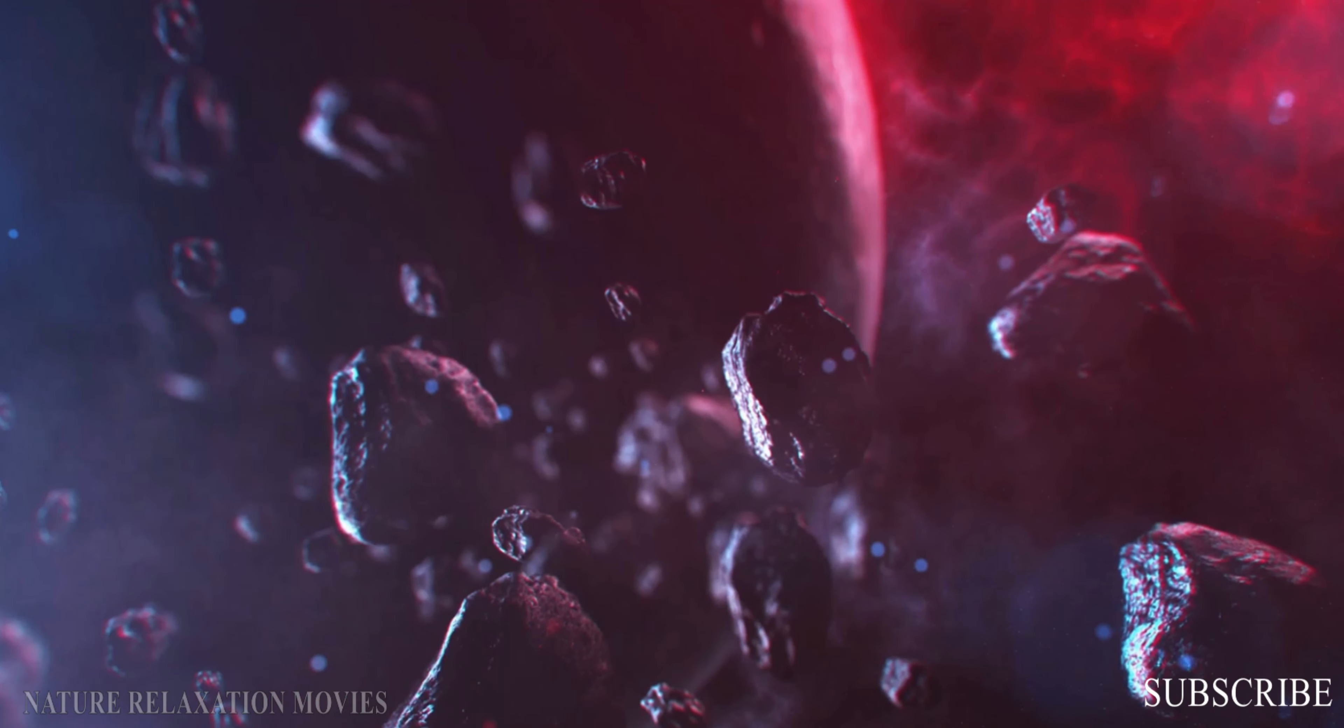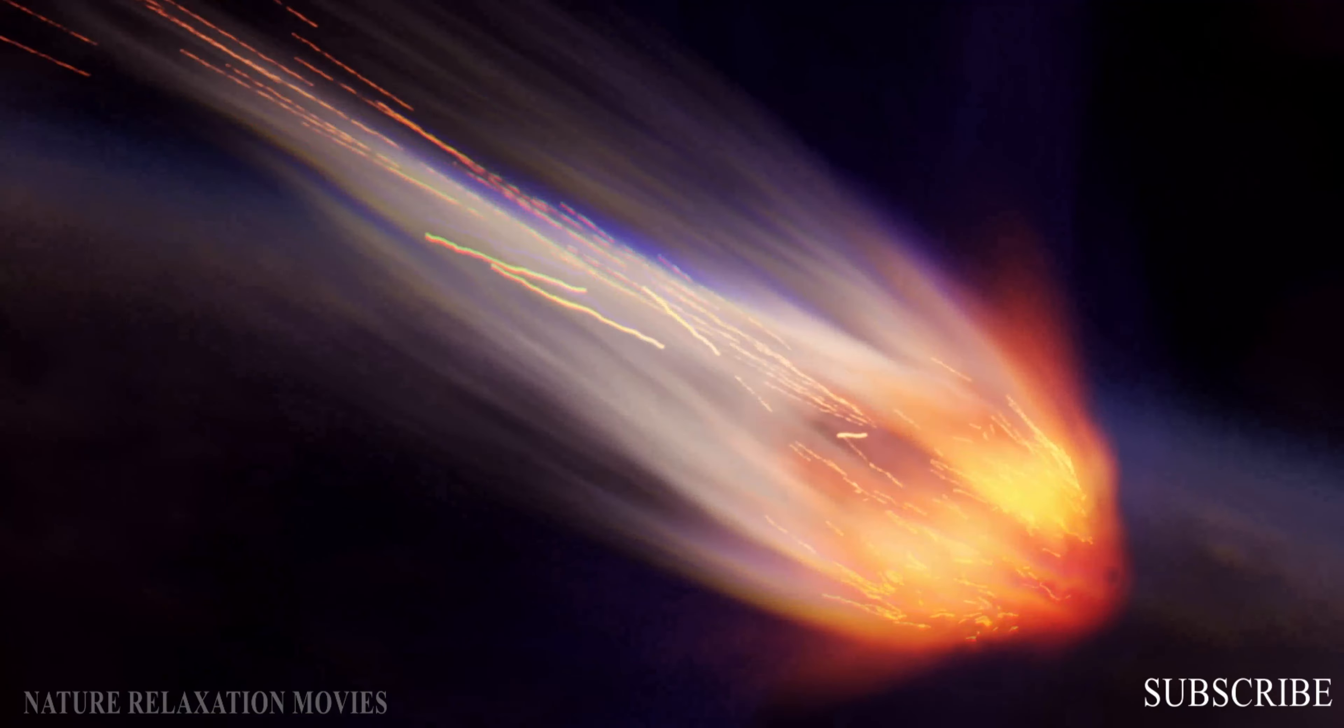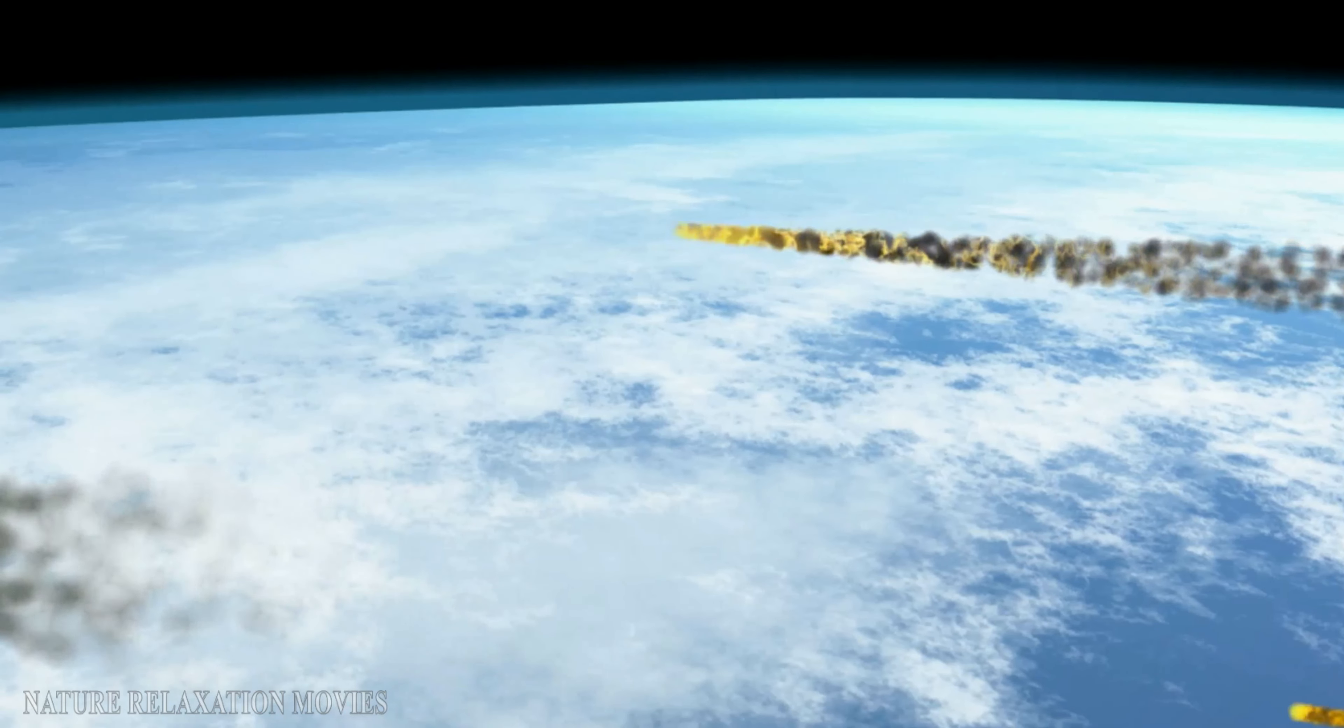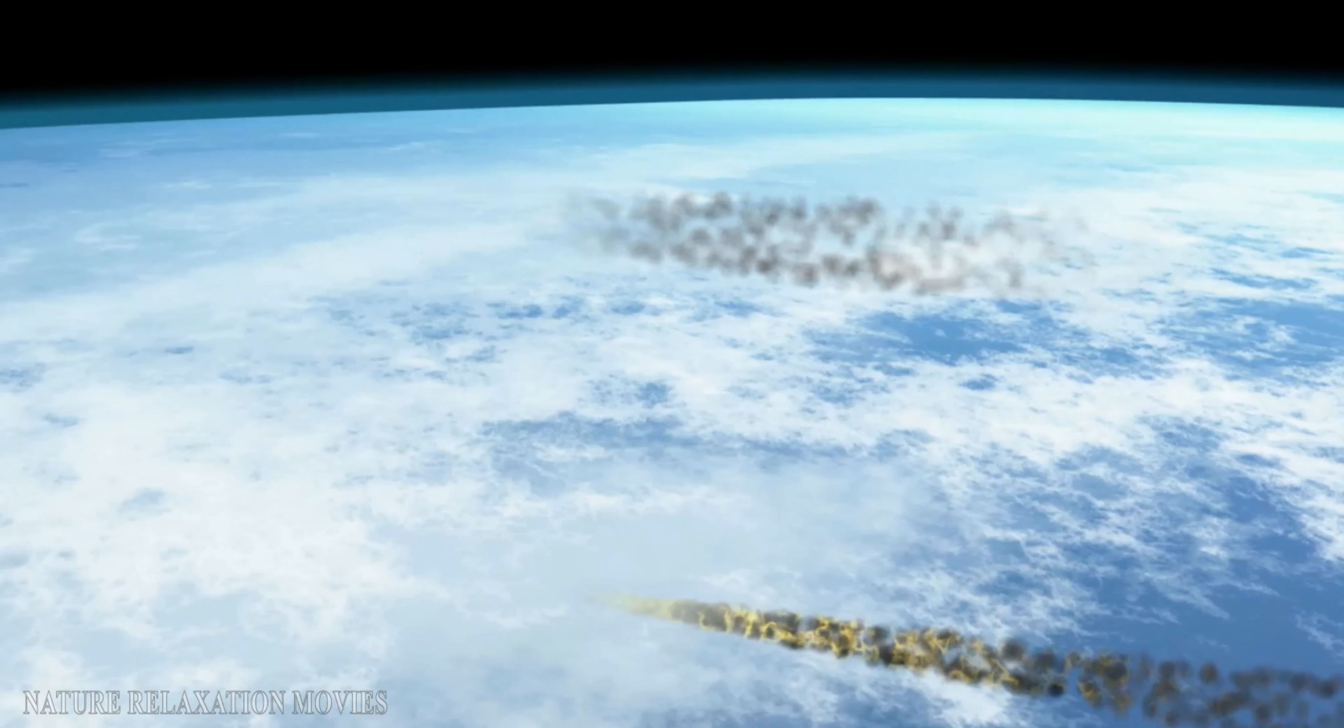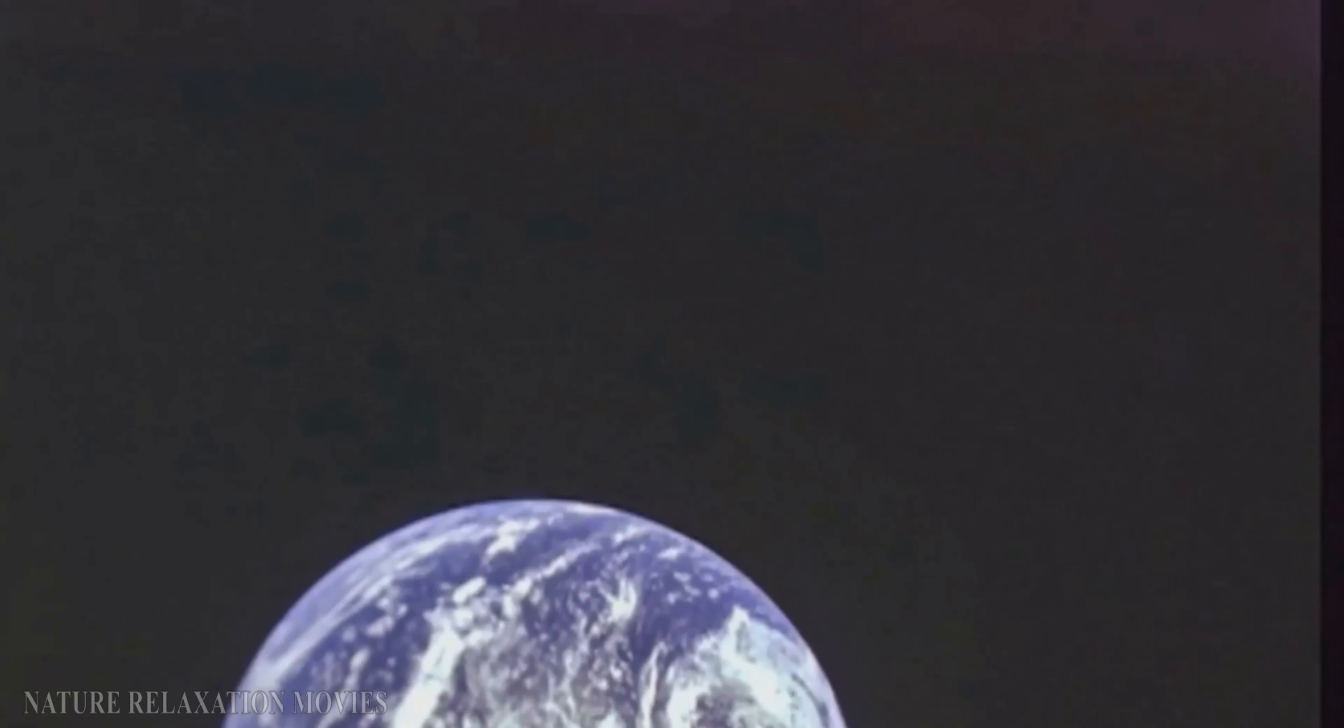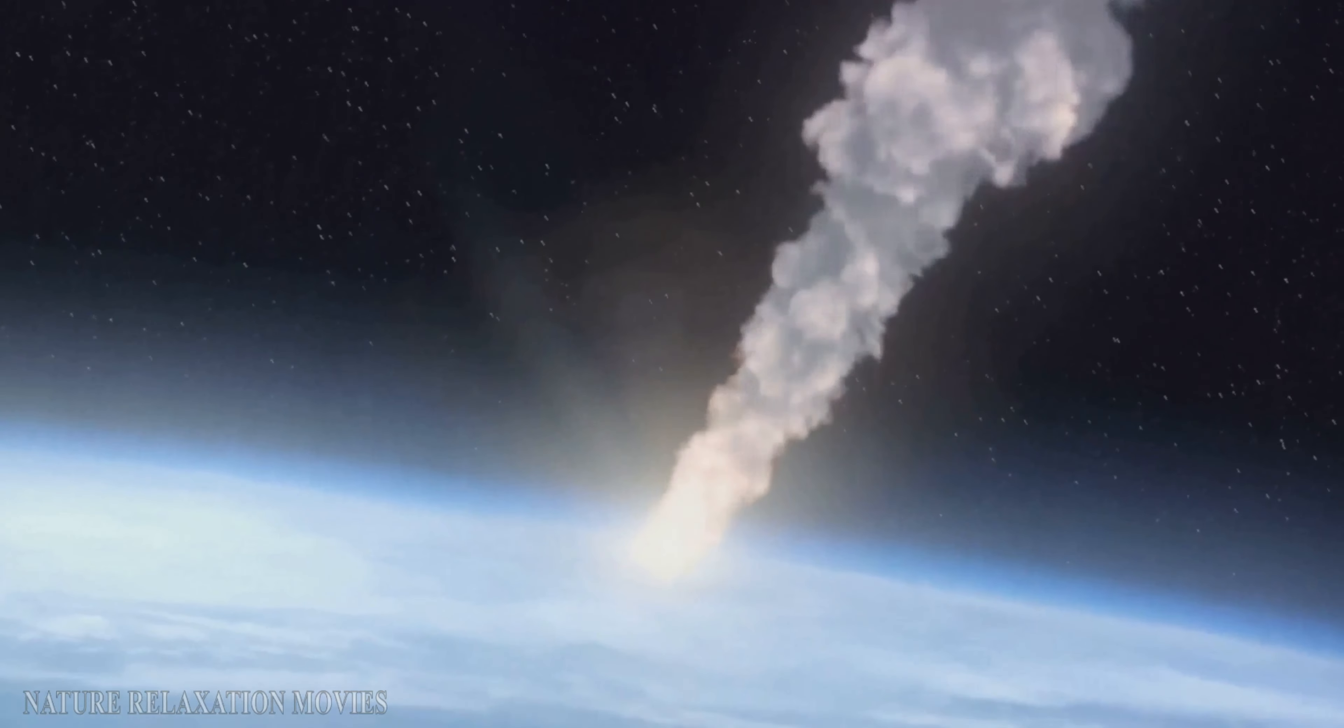Now imagine our planet, Earth, merrily orbiting the sun along its own path. Occasionally, our path intersects with the debris trails left by comets. And when this happens, the particles of debris are drawn towards Earth by our planet's gravity.